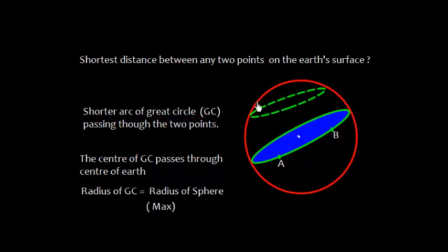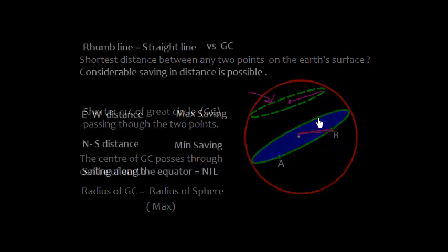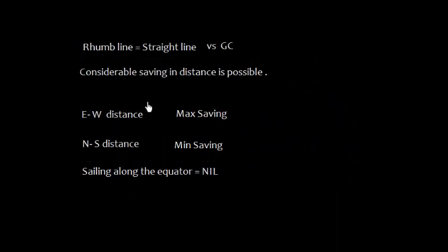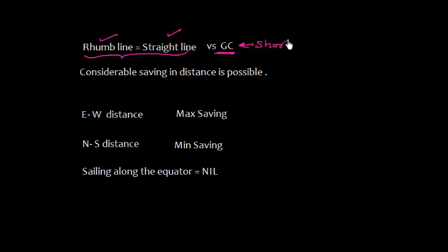It should be noted that a small circle has a different radius which is smaller than the radius of the great circle, which passes through the center of Earth. Hence the shortest possible distance is the great circle distance on Earth. The rhumb line distance, also called the straight line, and the great circle distance have some difference, and we can have a considerable saving since the great circle distance is the shortest.